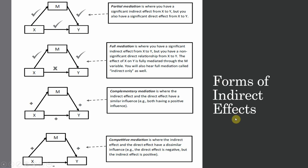There are different forms of indirect effects. Partial mediation occurs when some of the effect is passing through M and some is passing directly — that is, when the indirect path from X through M to Y is significant and the direct path is also significant. Full mediation is where you have a significant indirect effect from X to Y, meaning the impact of X on Y is passing through variable M, but the direct effect from X to Y is insignificant. The whole effect of X on Y passes through the mediating variable M.